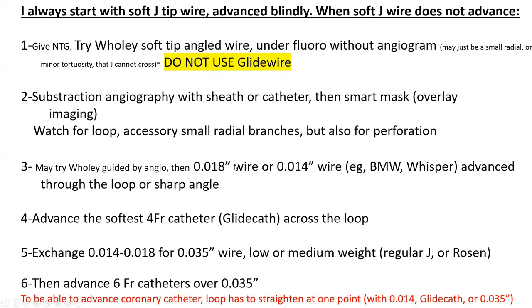You can use a V18 or SV5 wire, which is more supportive and will allow you to advance the subsequent catheter more easily. So you can try O18-inch or O14 coronary wire, and you put a large bend on it — not sharp, but a large bend on it. Then you advance the softest 4-French catheter, such as glide cath, across the loop. Then you exchange the O14 or O18-inch wire for O35-inch wire through the glide cath. Typically I use a regular J, or if you need more support, a Rosen wire. I try to avoid an Amplatz stiff wire because it causes wire bias — it may rub the artery eccentrically and cause spasm or injury.